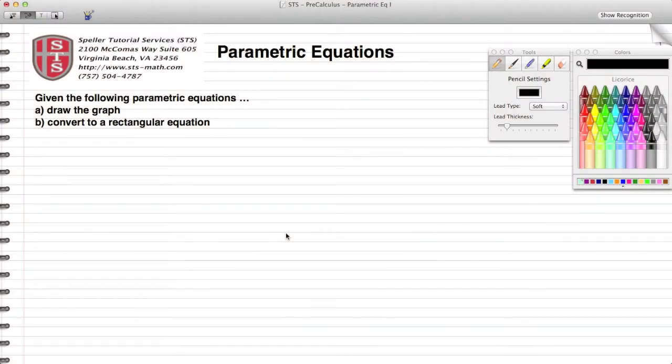Welcome back to Speller Tutorial Services. Today we're going to talk about parametric equations. Parametric equations are important because they give more information than what you would get from a regular equation that just uses XY coordinates. Normally with an equation using XY coordinates, we're able to tell the vertical and horizontal displacement of an object, but we don't know the time at which the object is in those positions or locations.